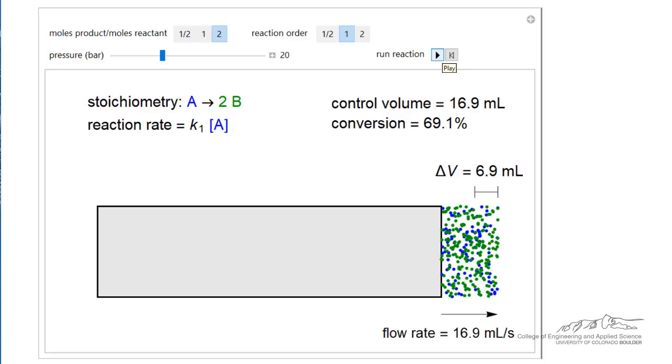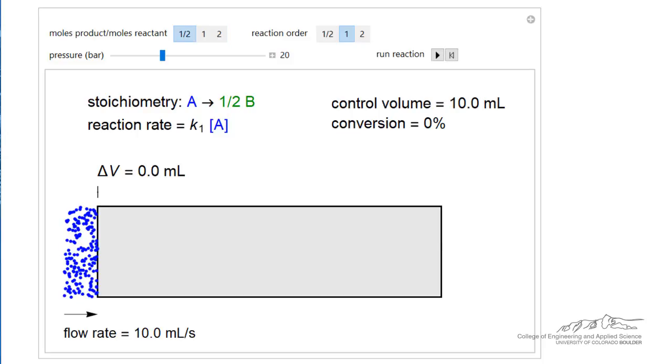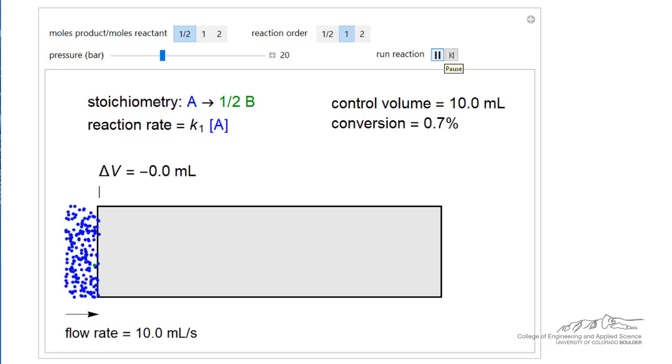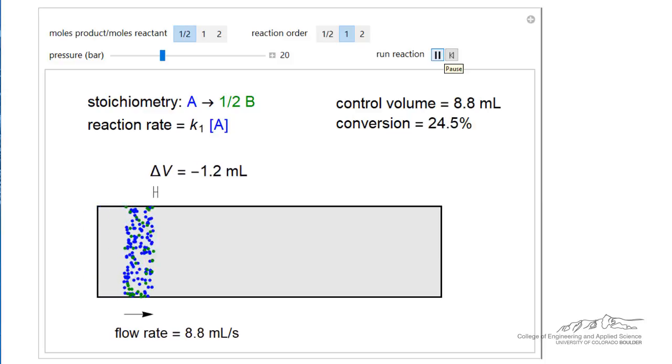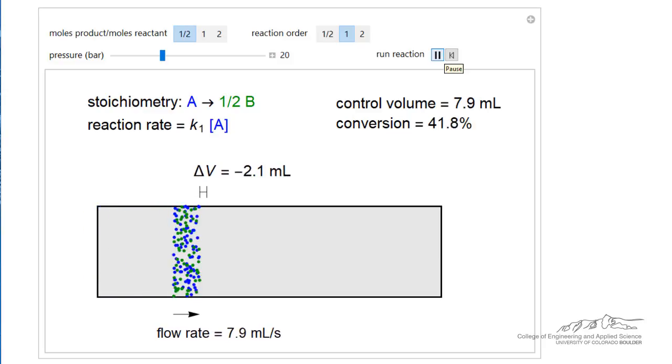If we instead reset it and run a reaction where one molecule of A forms only half a molecule of B, so the number of moles decrease. Now as the reaction proceeds notice the volume gets smaller.